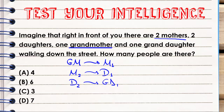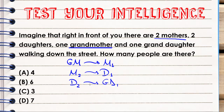As you can see, we have three generations of women right here. I can now count: we have two mothers — the grandmother and the mother — two daughters — the mother is the daughter of the grandmother, and the younger daughter is the daughter of the mother — and one granddaughter. So this problem is solved by three people.